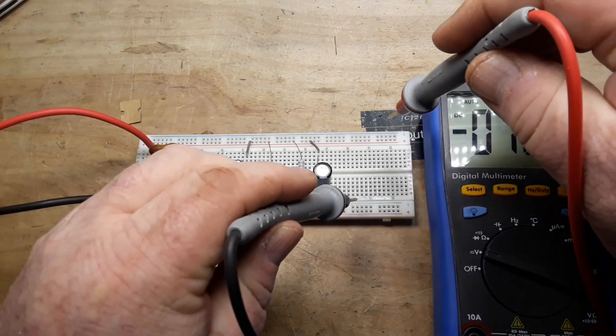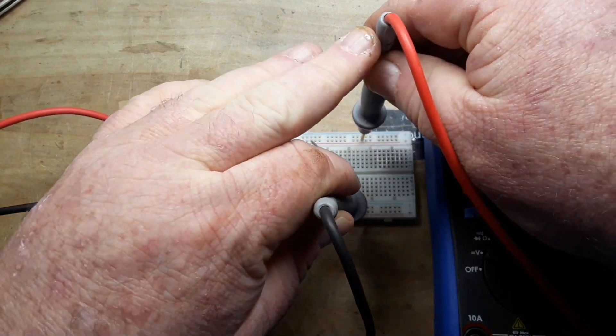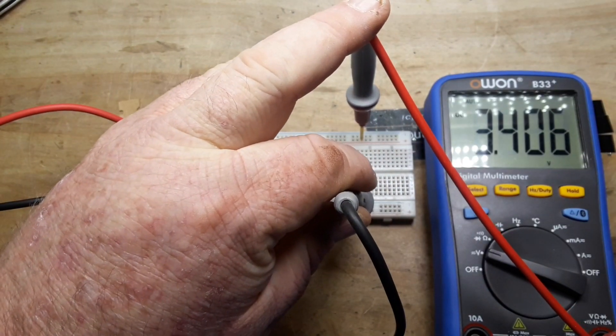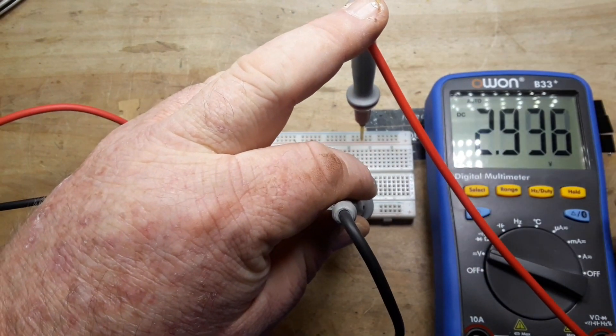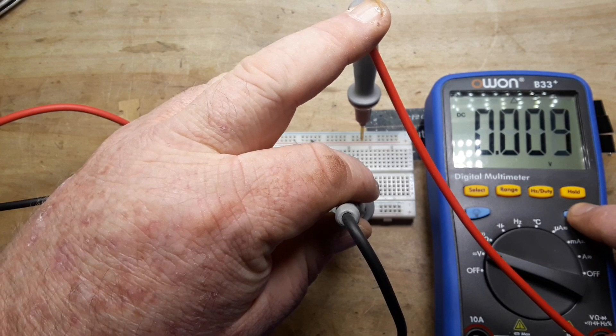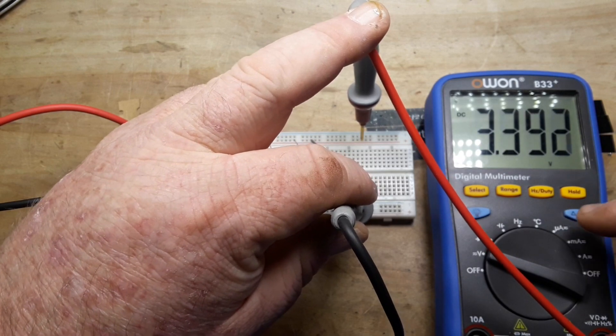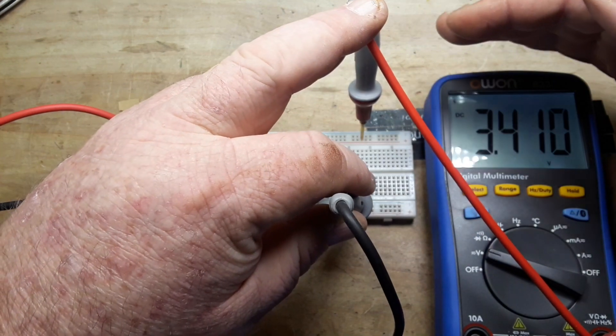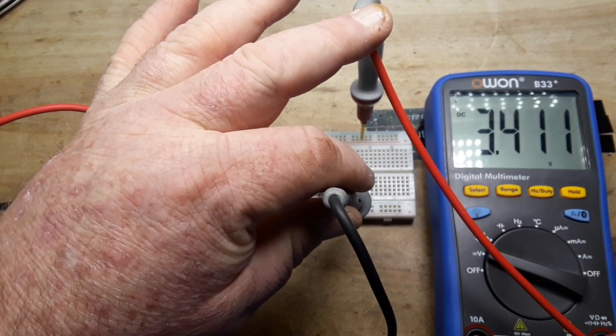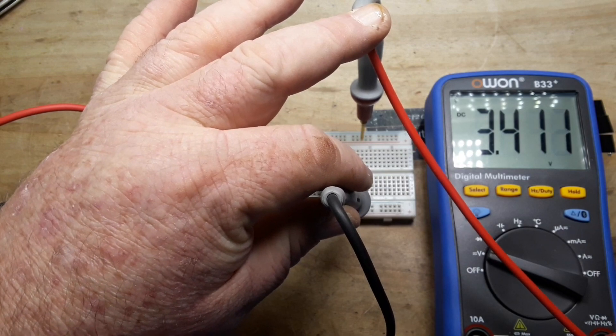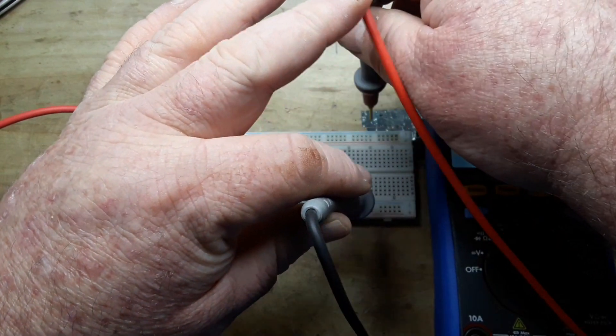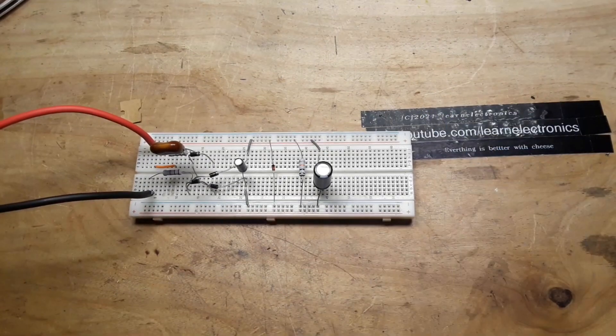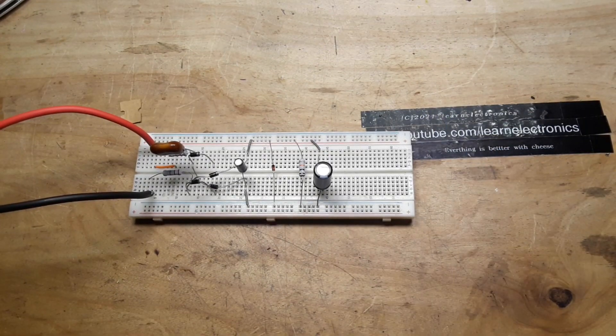Then we'll probe. There you can see that pretty well, right? Here we go, 3.4 volts. Not too terribly shabby. 3.3 is what we were aiming for, so 3.4, a tenth of a volt out of place, is not too bad.